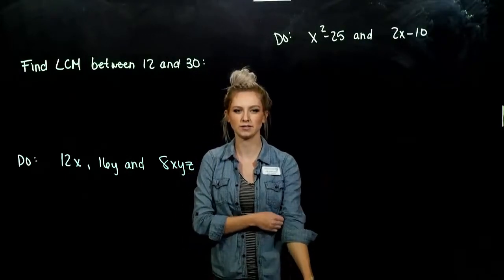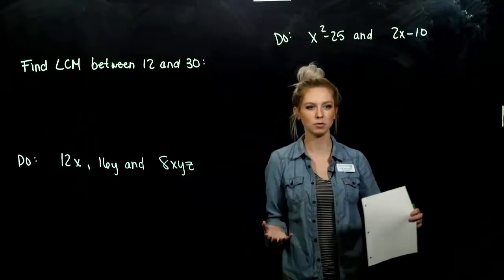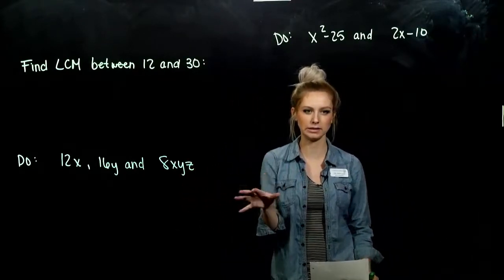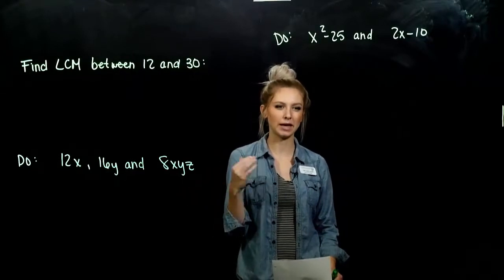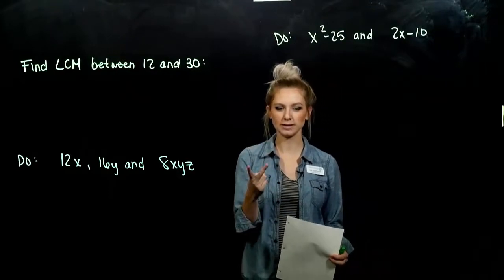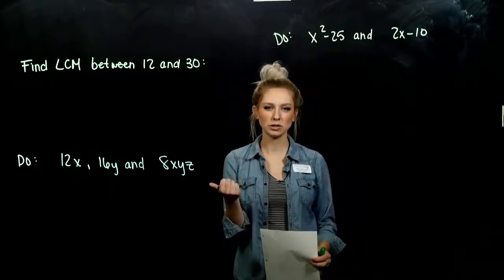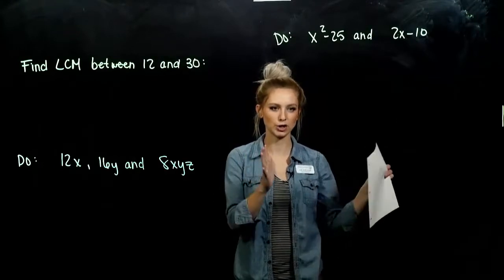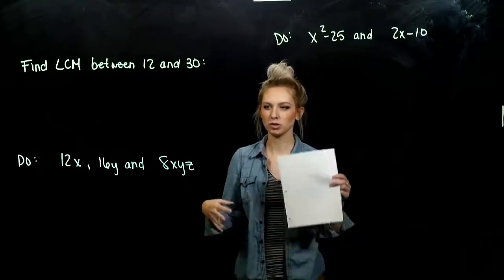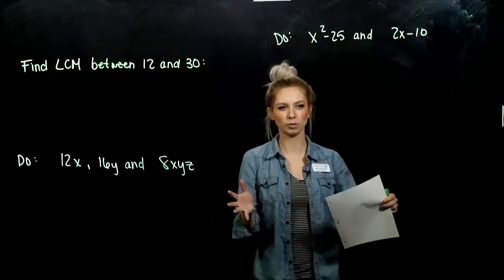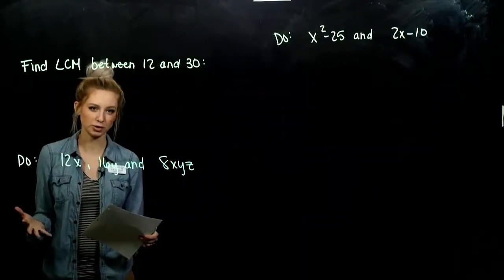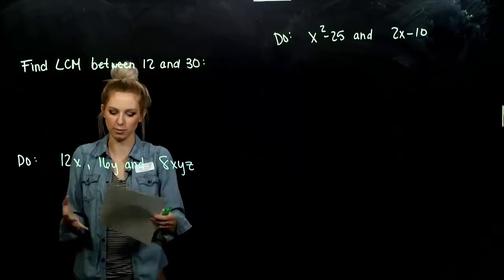This next section, 6.3, is super important. A lot of what we're going to do in the rest of this class builds off of this one concept: least common multiple. We touched on it in the beginning of this class as a warm-up review, but there are two different ways we can find the least common multiple — the book's way, which is very cut and dry and procedural, or the building way, which is more intuitive and helpful. Use whichever you're most comfortable with.